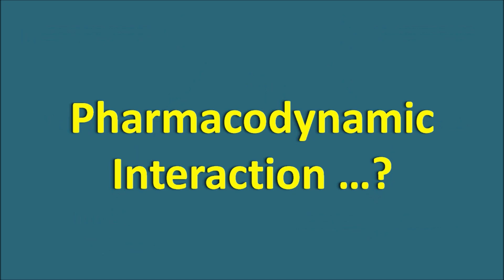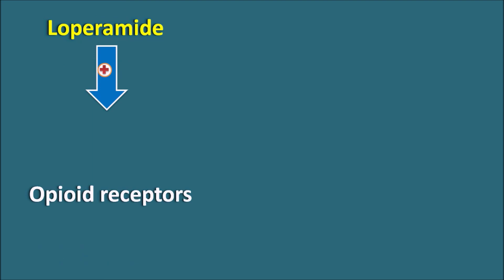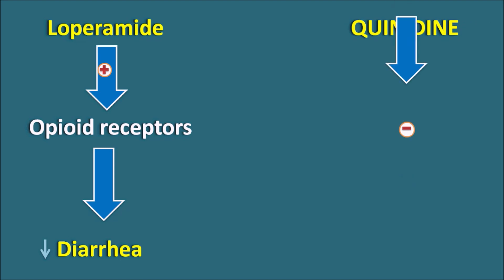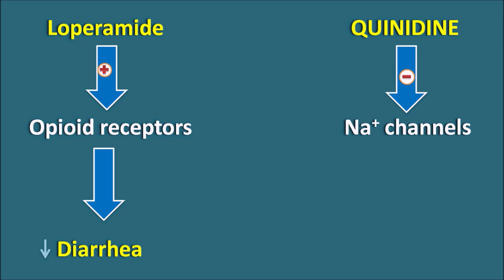First let us check the pharmacodynamic interaction. Loperamide is an opioid that activates opioid receptors. Even though it does not enter the CNS, it acts on peripheral opioid receptors. These opioid receptors are G-protein coupled receptors that are inhibitory in nature, associated with decreased cyclic AMP or opening of potassium channels, producing relaxation of GI smooth muscle and decreasing GI motility. Quinidine, on the other hand, blocks voltage-gated sodium channels in the rapid depolarization phase, inhibiting the rate of cardiac contraction. There is no drug interaction between loperamide and quinidine at the mechanism of action level.